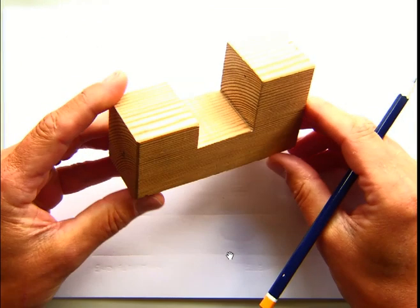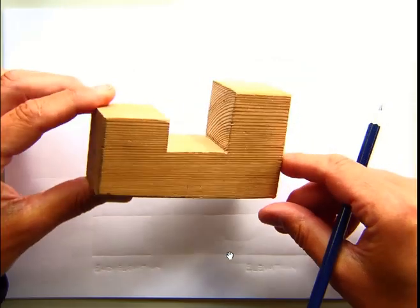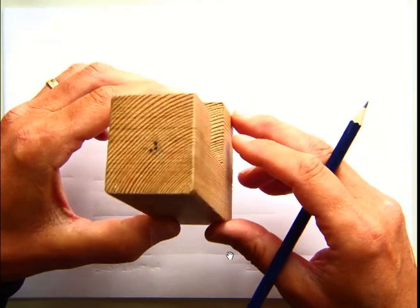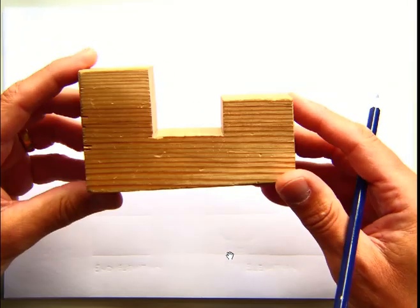Okay, this is lesson two on orthographic freehand sketching. In this lesson, what we're going to do is have a go at drawing the three orthographic views of this shaped block here. So similar to lesson one, we're going to draw an elevation, we're going to draw an end elevation, and we're going to draw a plan.